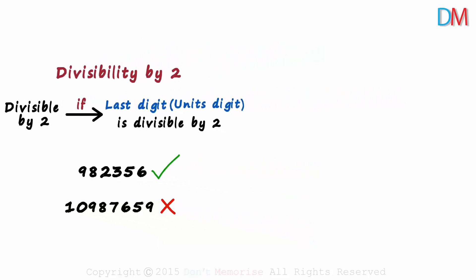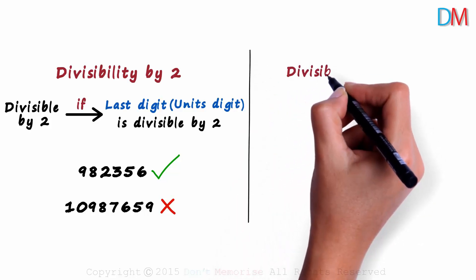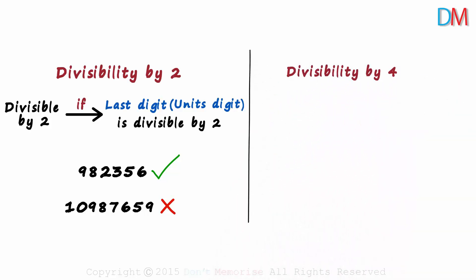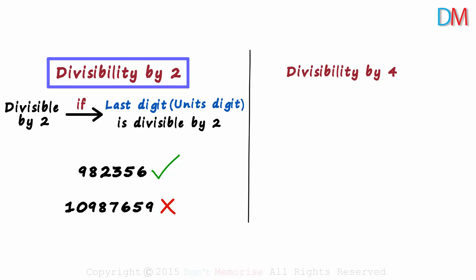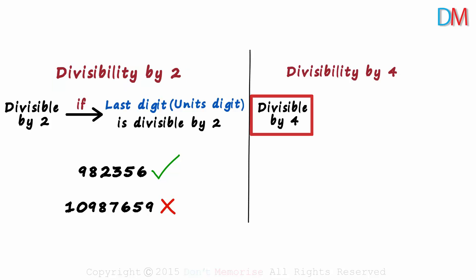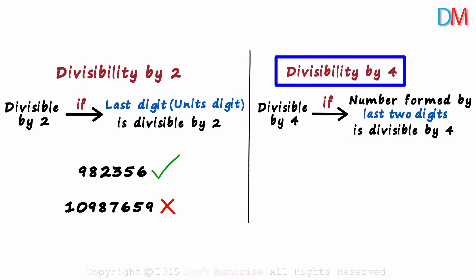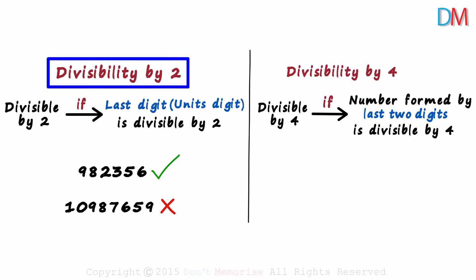Now let's move on to the second rule: divisibility by four. How can we quickly tell if a number is divisible by four? It is pretty similar to the divisibility test of two. A number is divisible by four if the number formed by the last two digits is divisible by four. In the case of the divisibility test of two, we just had to look at the last digit.